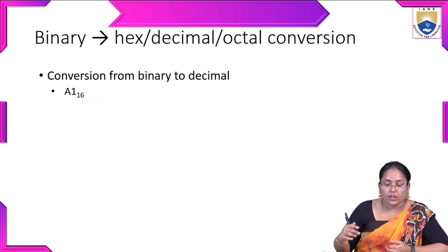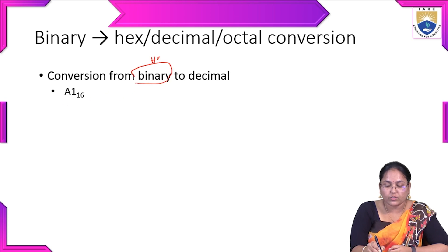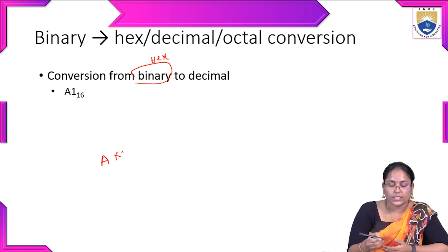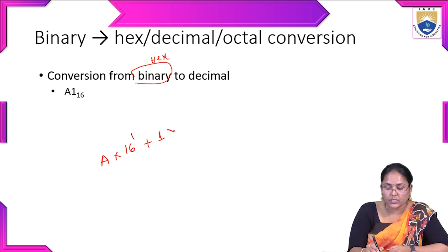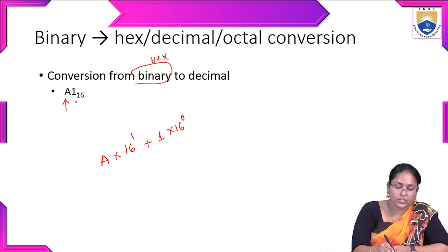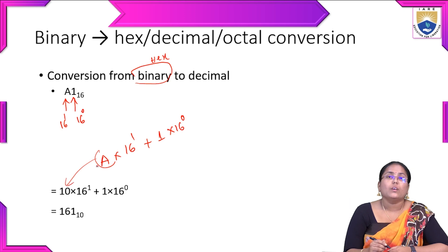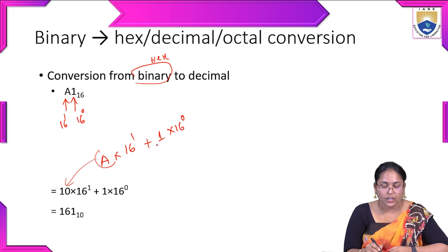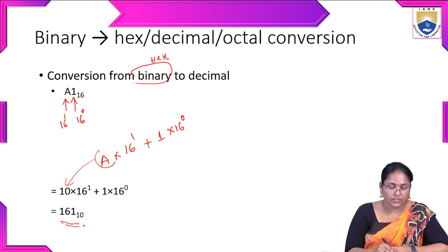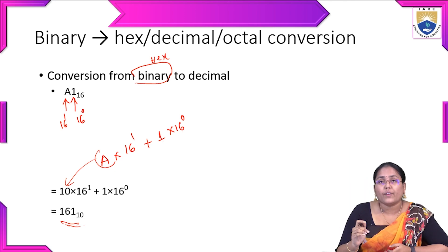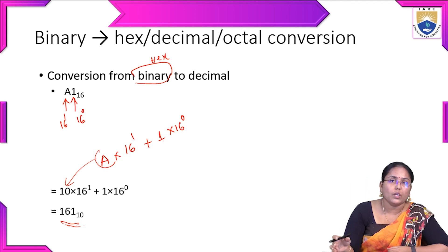For hexadecimal-to-decimal conversion, the example is A1 in base 16. A = 10 in decimal. So: 10 × 16^1 + 1 × 16^0 = 160 + 1 = 161 to base 10. This is the method to convert hexadecimal values into decimal form — multiply each digit by the corresponding power of 16 and sum the results.